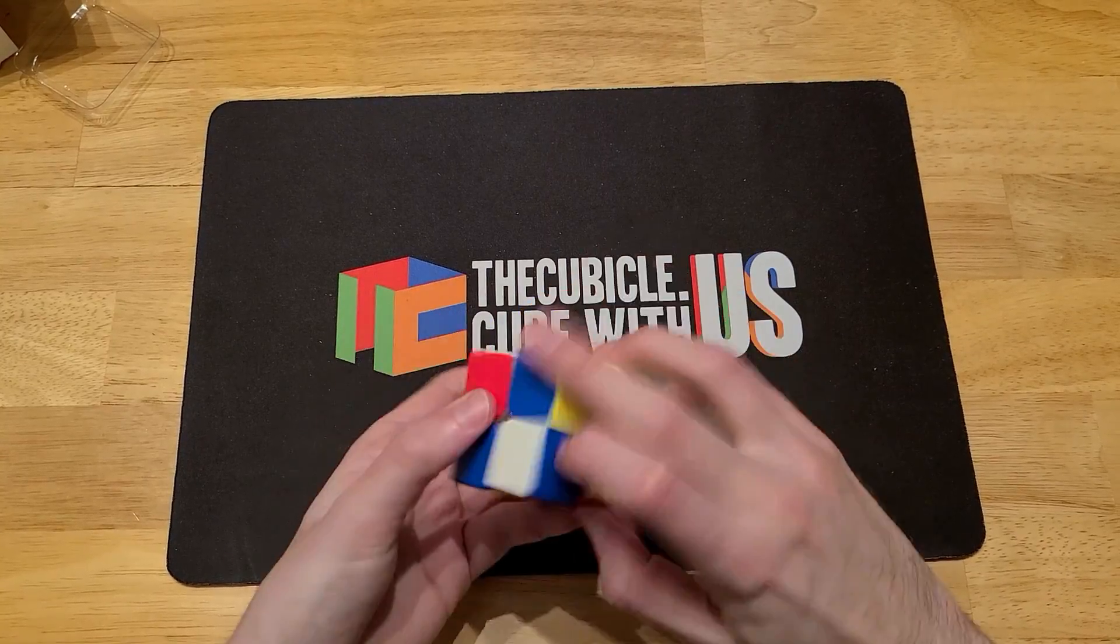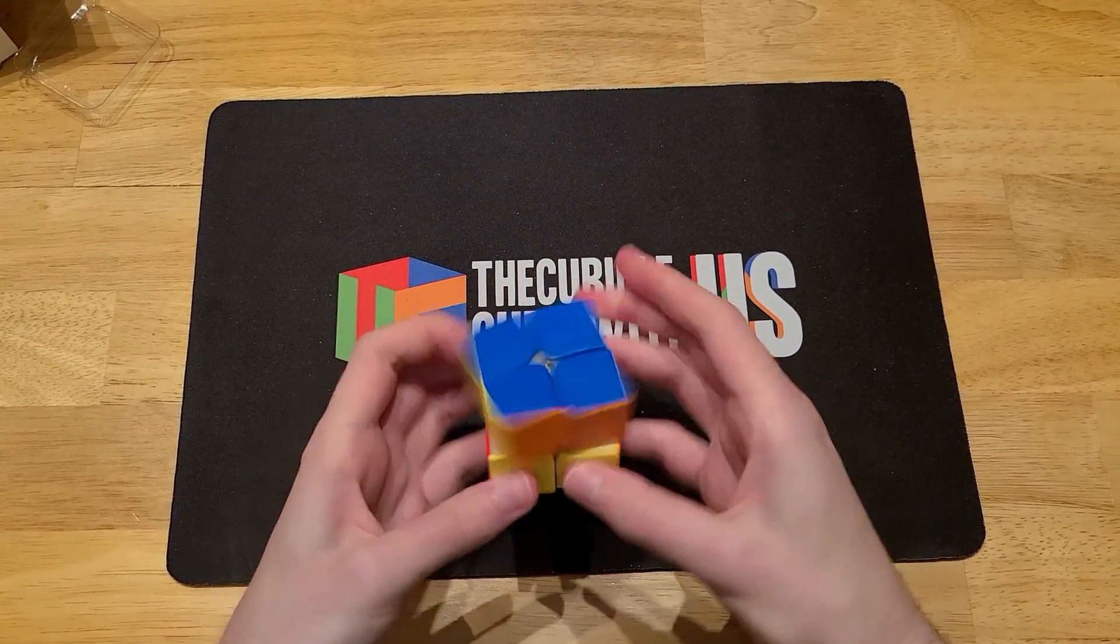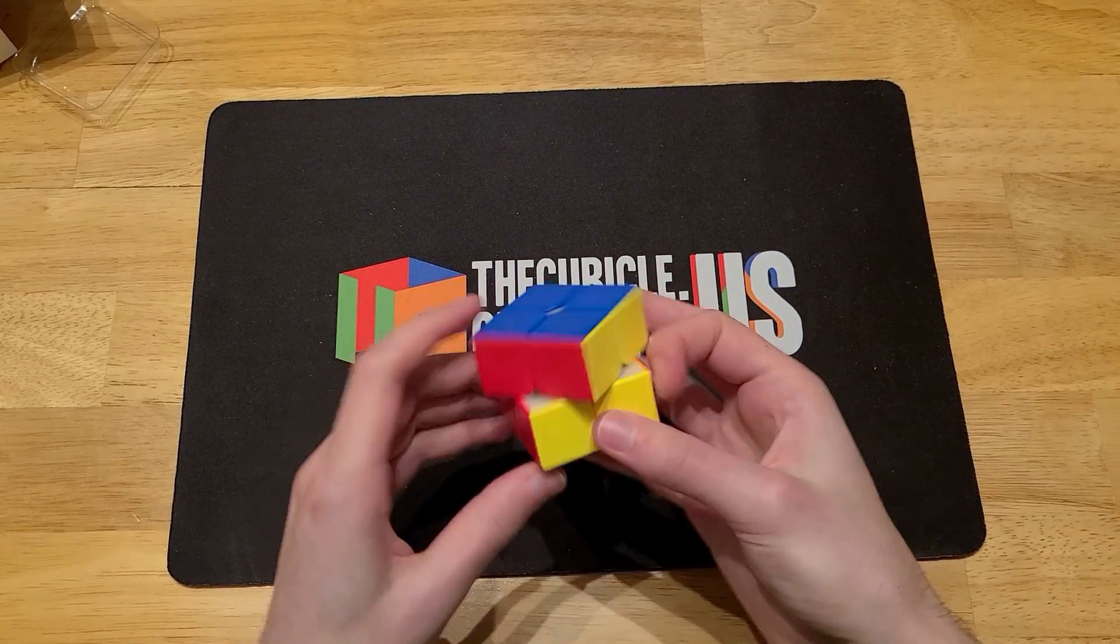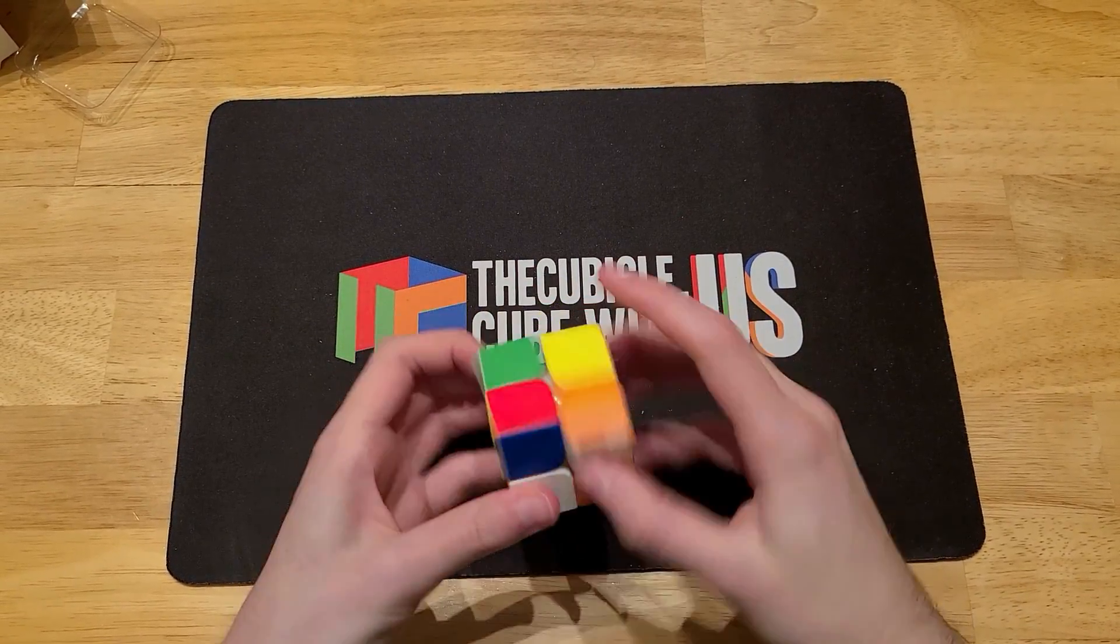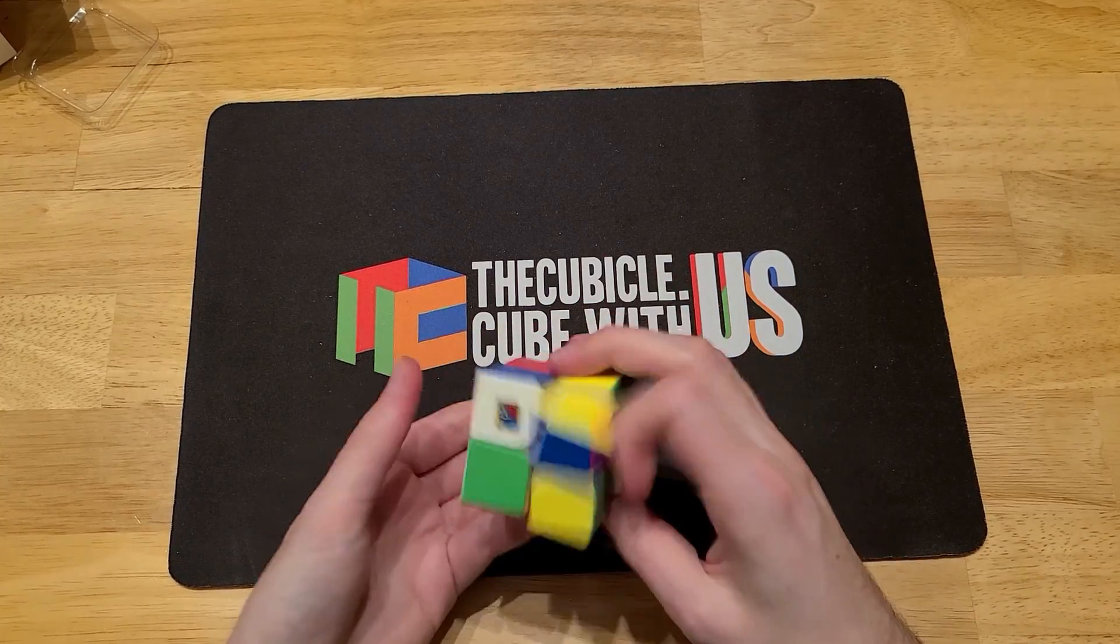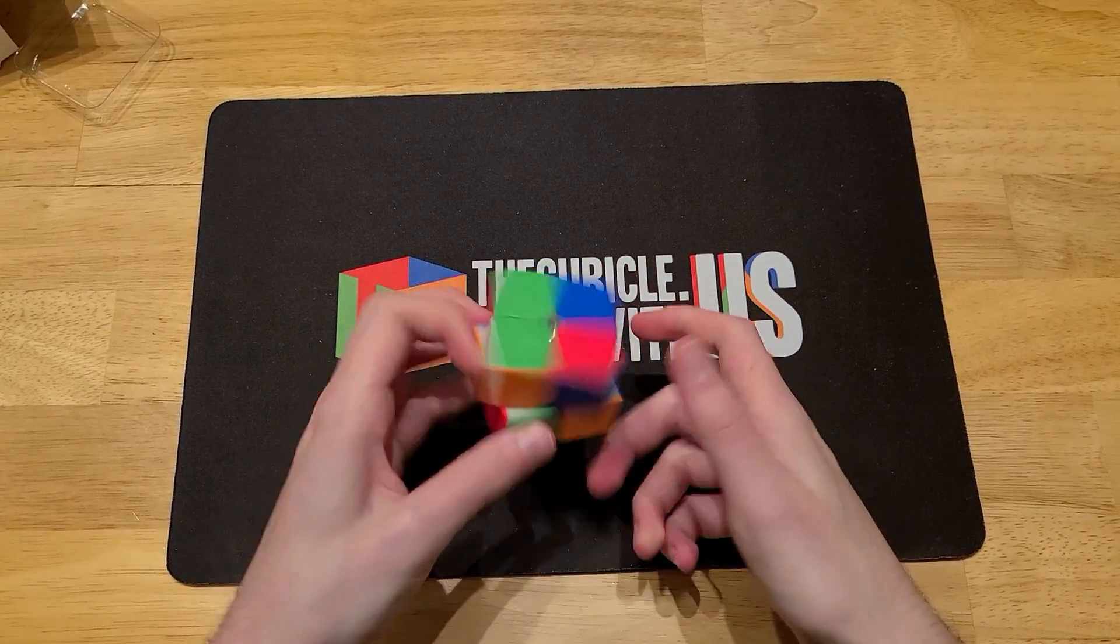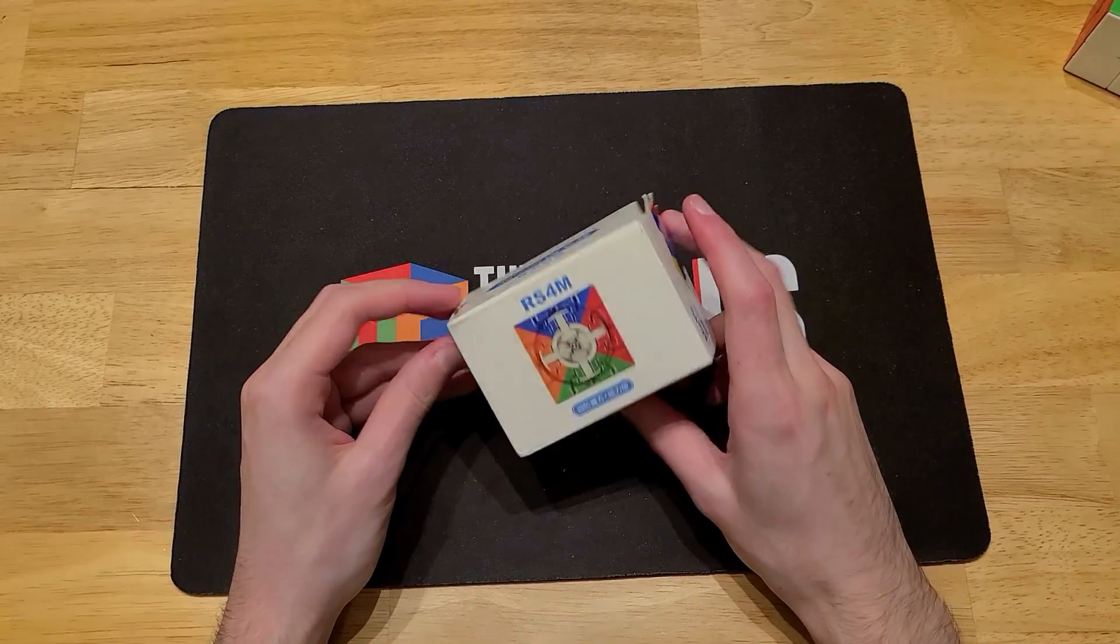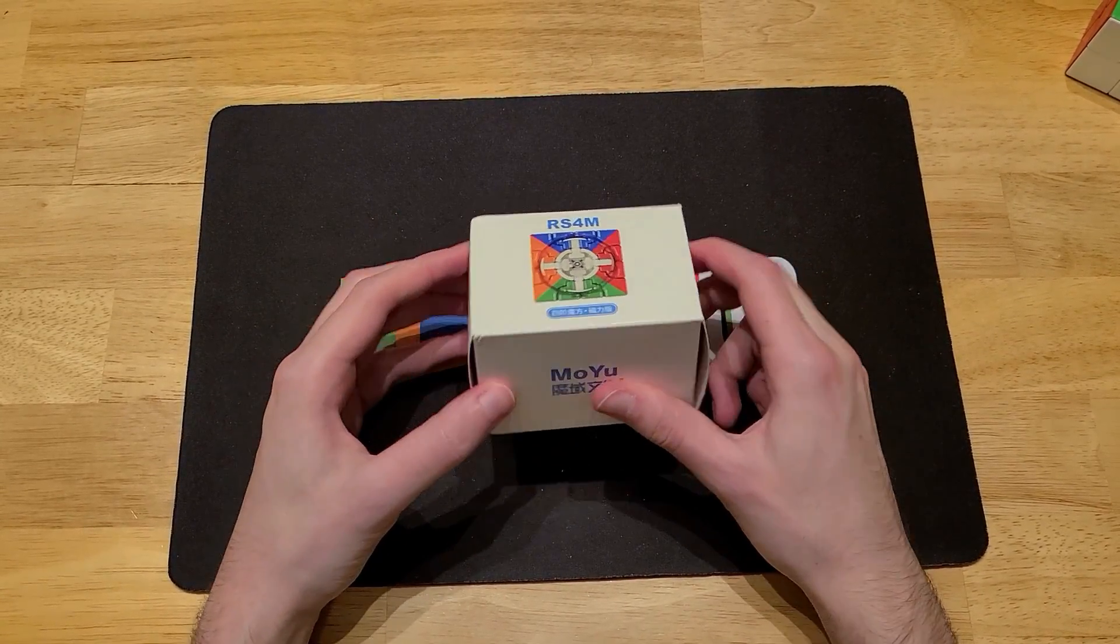Like for some reason, I'm just really struggling to control this right now. But nevertheless, it turns great. And I think that's the number one goal of the budget cube. Alright, and here's the final cube. This is the RS4M.